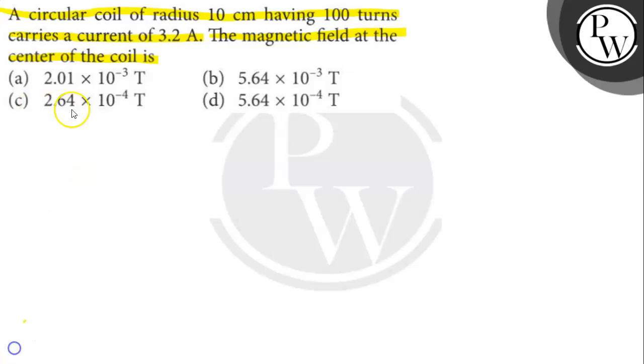We will find out. So here N equals 100 turns. I equals 3.2 Ampere current.